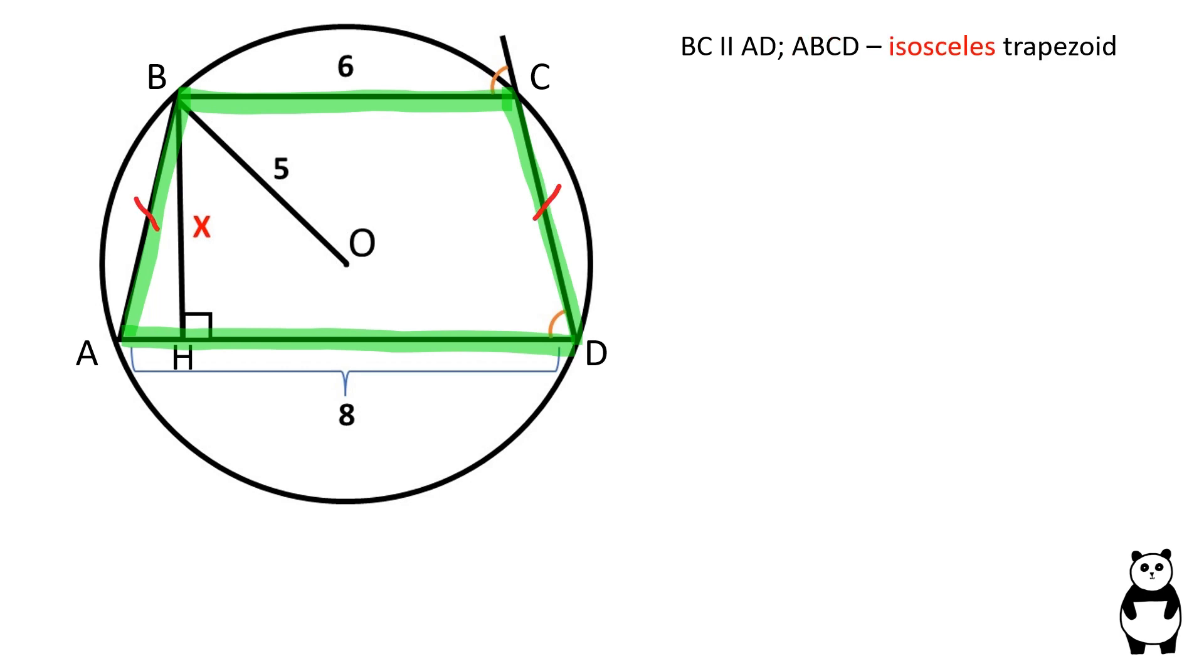ABCD is an isosceles trapezoid because only an isosceles trapezoid can be inscribed in a circle. Let's draw the line of symmetry.